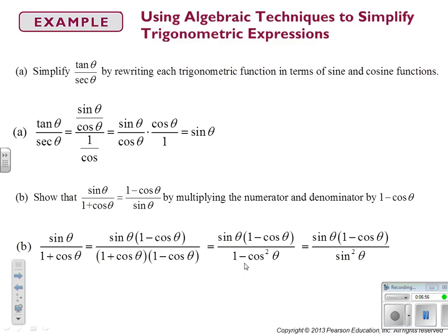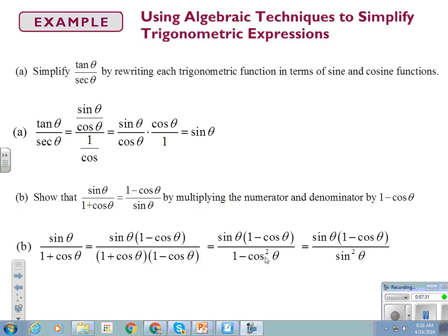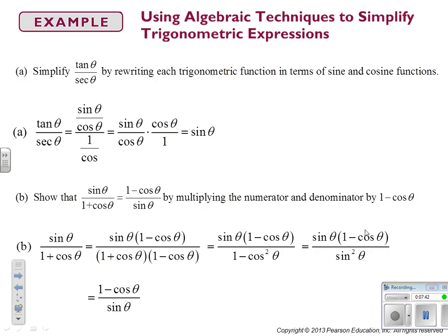If I subtract cos²θ from both sides of sin²θ + cos²θ = 1, I get sin²θ = 1 − cos²θ. Add that identity to your list of Pythagorean identities right now. Also add cos²θ = 1 − sin²θ, because we're going to use both of those iterations. So when we replace (1 − cos²θ) with sin²θ, we can cancel one sine factor, and we get (1 − cos θ) over sin θ — and that is our objective.